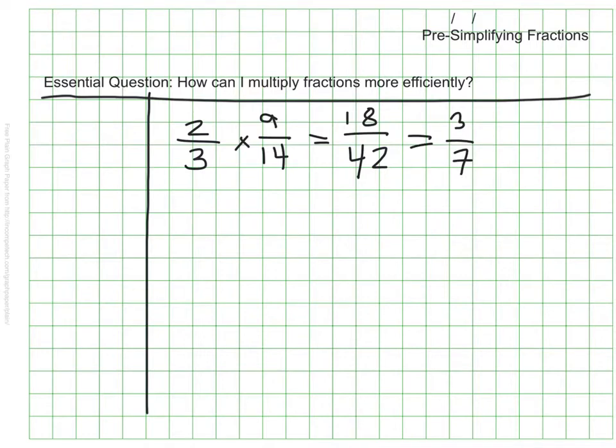However when I'm multiplying fractions like this I like to do a process that I call pre-simplifying which means I like to simplify my fractions before I multiply. By doing that it means that I don't have to multiply numbers that might be large and it means that I have less work to do when it comes to simplifying at the end.